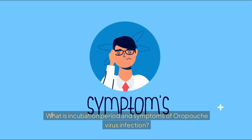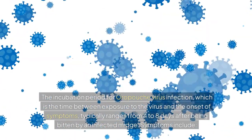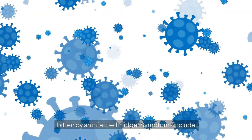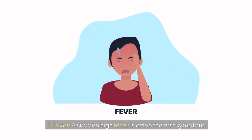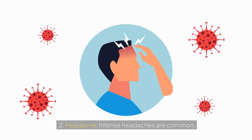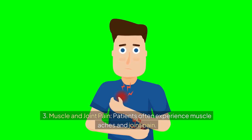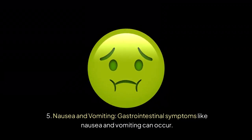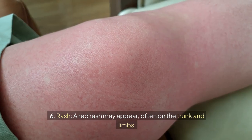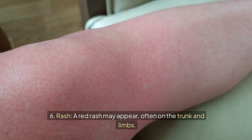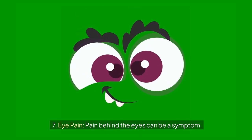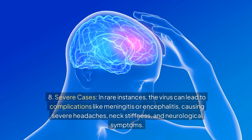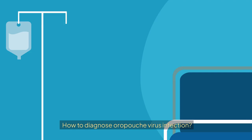What is the incubation period and symptoms of Oropouch virus infection? The incubation period typically ranges from 4 to 8 days after being bitten by an infected midge. Symptoms include: 1) fever — a sudden high fever is often the first symptom; 2) headache — intense headaches are common; 3) muscle and joint pain — patients often experience muscle aches and joint pain; 4) dizziness — some individuals may feel lightheaded or dizzy; 5) nausea and vomiting — gastrointestinal symptoms can occur; 6) rash — a red rash may appear, often on the trunk and limbs; 7) eye pain — pain behind the eyes can be a symptom; and 8) in rare instances, the virus can lead to complications like meningitis or encephalitis, causing severe headaches, neck stiffness, and neurological symptoms.